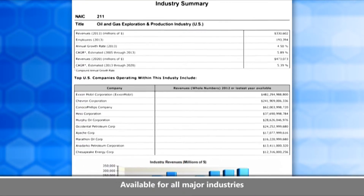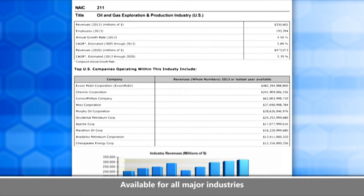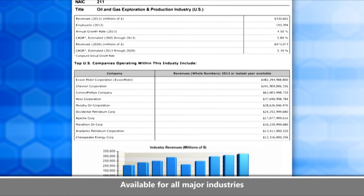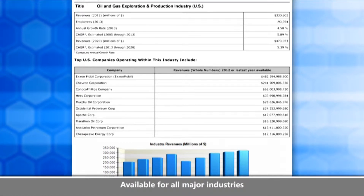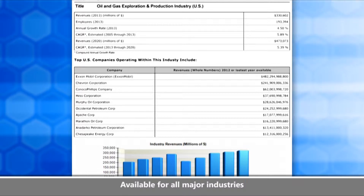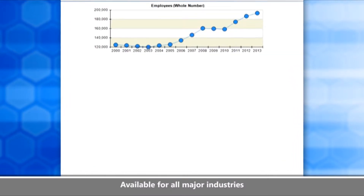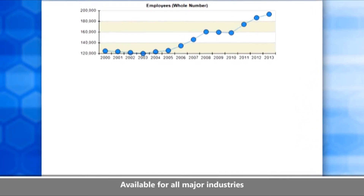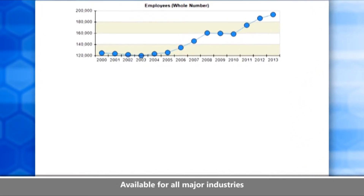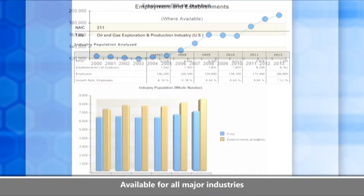We start with a simple industry summary — a snapshot giving you a lot of current information about an industry like revenues, employee count, and CAGR, or compound annual growth rate, on one page. At the bottom of the page you'll see we're using the latest in DataViz software to give you lots of charts in addition to tables to help you really get a grasp of what's going on.